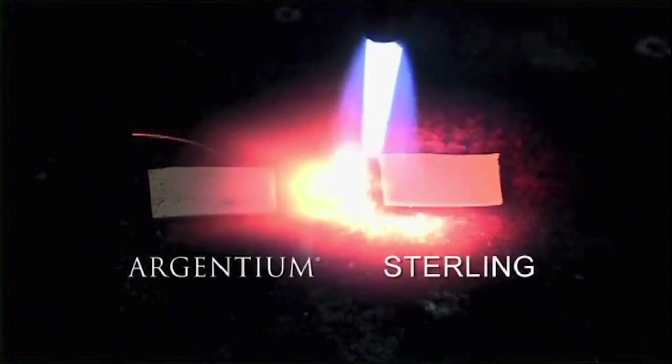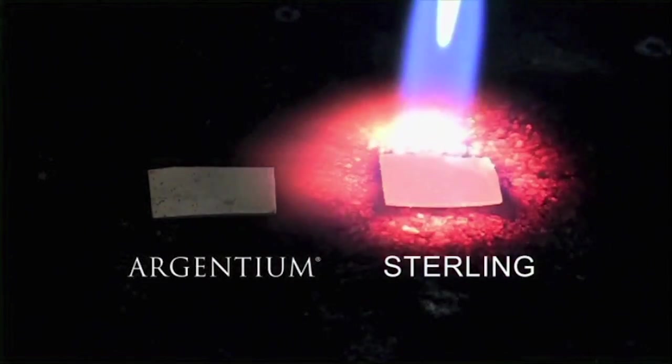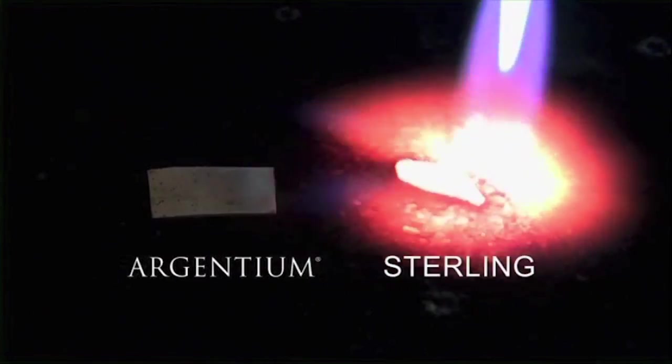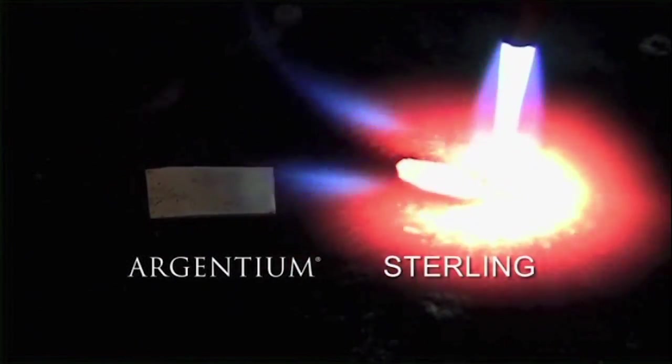I've placed pieces of Argentium and Sterling side by side on my charcoal block to demonstrate the differences in melting temperature, surface oxides and roundness.